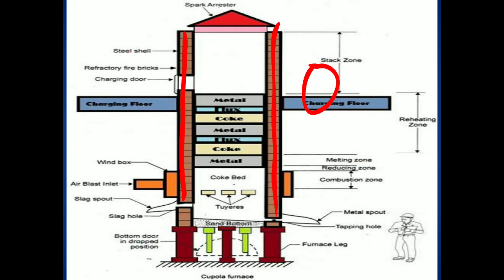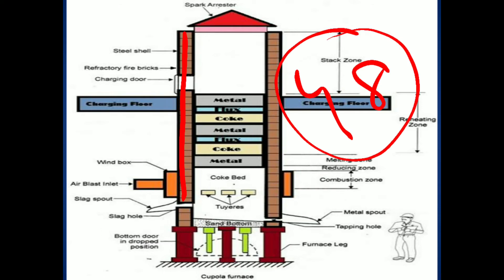Per day, the cupola furnace can melt about 48 tons of pig iron. For this process we need to supply hot air, which is called the air blast. The furnace contains two notches — one notch for removing slag and one notch for removing cast iron in the molten state.